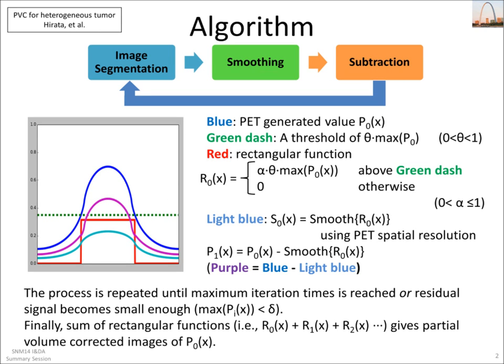We kind of take the image apart. We're going to find regions, find values, set some thresholds, cut those images off, smooth them, and subtract — and do that iteratively. We're going to basically piece the image back together, taking into account the resolution of the system.